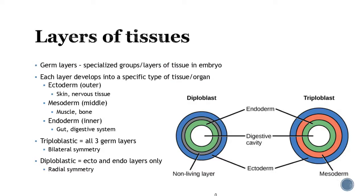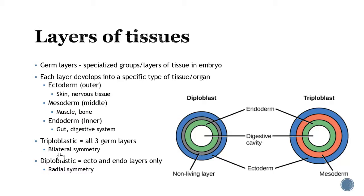Another way to classify animals is by germ layers. Each layer develops into a specific type of tissue or organ. The outer layer is the ectoderm (shown in blue), the middle layer is the mesoderm, and the inner layer is the endoderm — think of that as your gut and digestive system. Organisms with all three germ layers are most likely going to have bilateral symmetry. Those with only two layers — ectoderm and endoderm, no mesoderm — are going to primarily have radial symmetry.